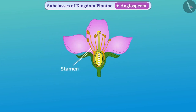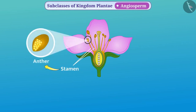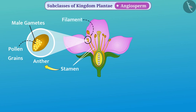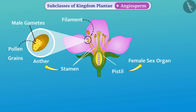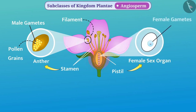The stamen has two parts. The upper inflated part is called the anther, in which the pollen grains are formed that contain male gametes. The long and thin part attached to the anther is called the filament. In the center of the flower there is a jug-like part called the pistil. It is the female sex organ of the plant and consists of female gametes called eggs in the ovary.